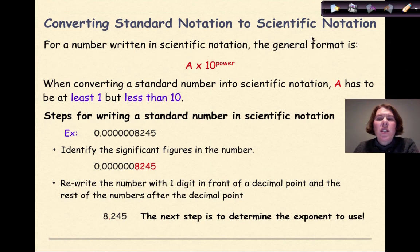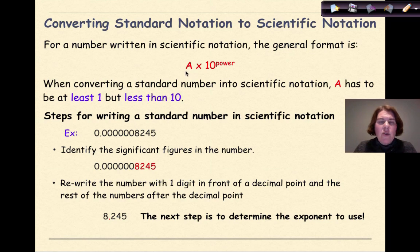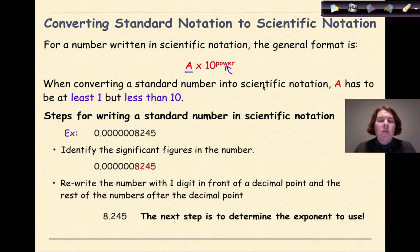Converting standard notation into scientific notation. There's a very specific format we're going to use when we take a regular number and put it into scientific notation. For a number written in scientific notation, the general format is A times 10 to some power, where A represents our actual numbers. When converting a standard number into scientific notation, A has to be at least one but less than ten.